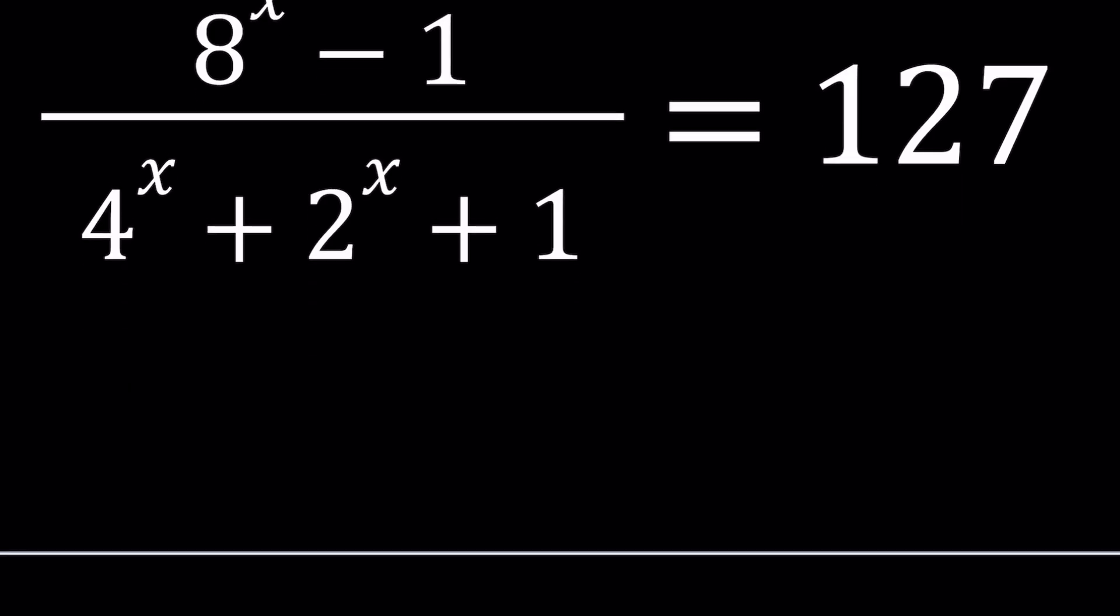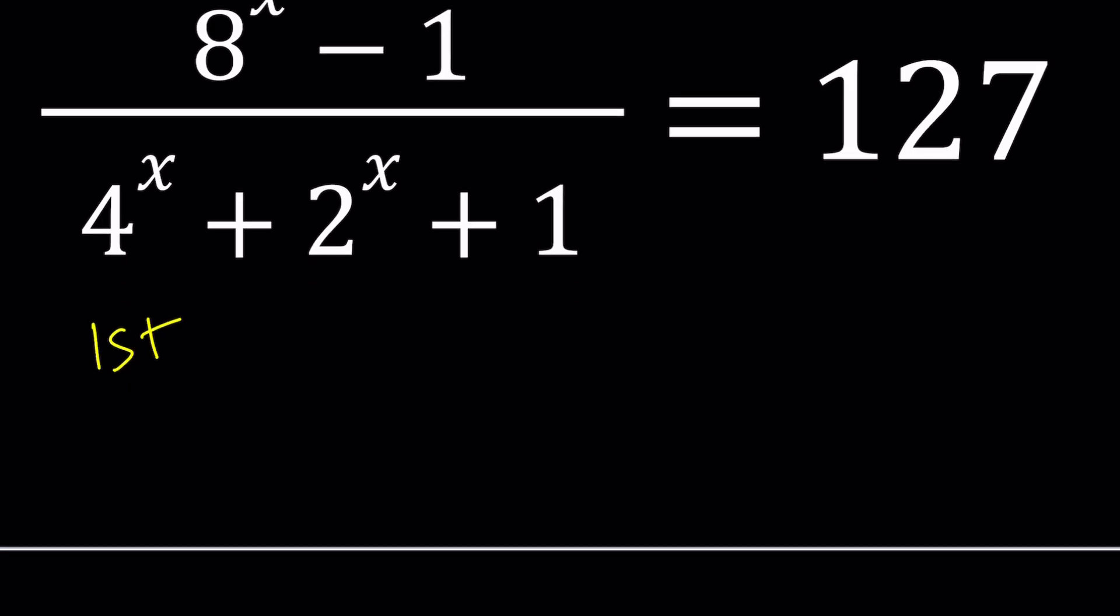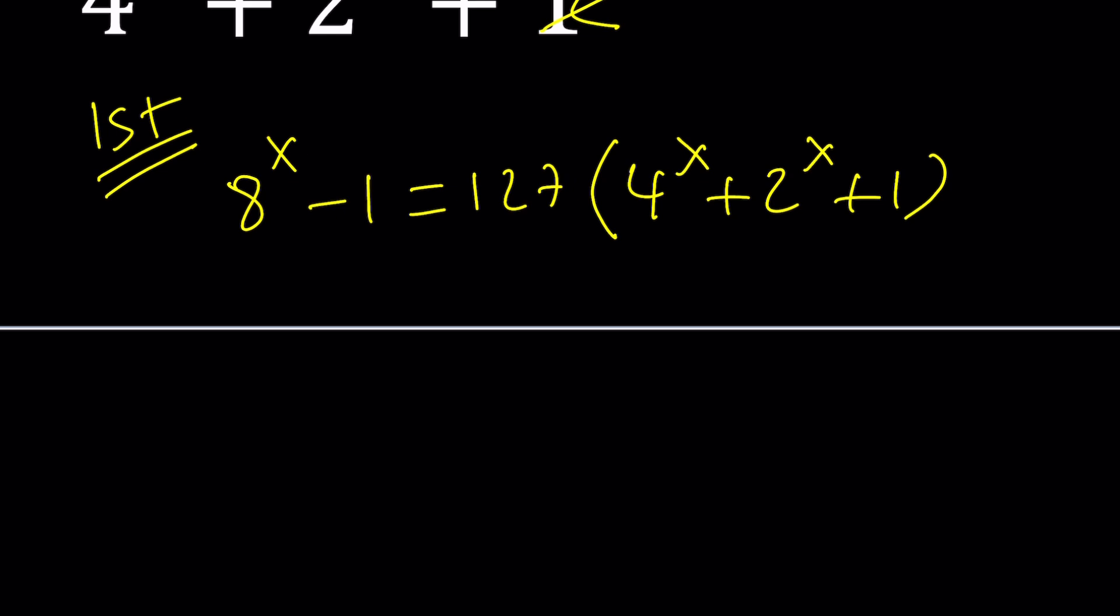So I'll be presenting two methods and let's start with the first one. My first method is basically using cross multiplication directly. If you multiply both sides by the denominator, we're going to get 8^x - 1 = 127(4^x + 2^x + 1). Now you can go ahead and distribute everything: 8^x - 1 = 127·4^x + 127·2^x + 127.